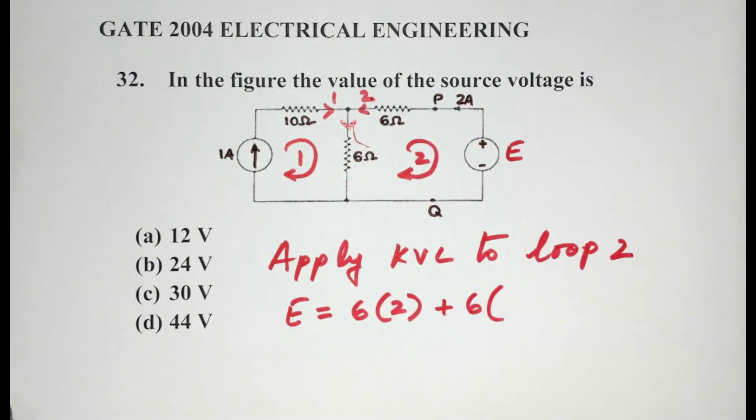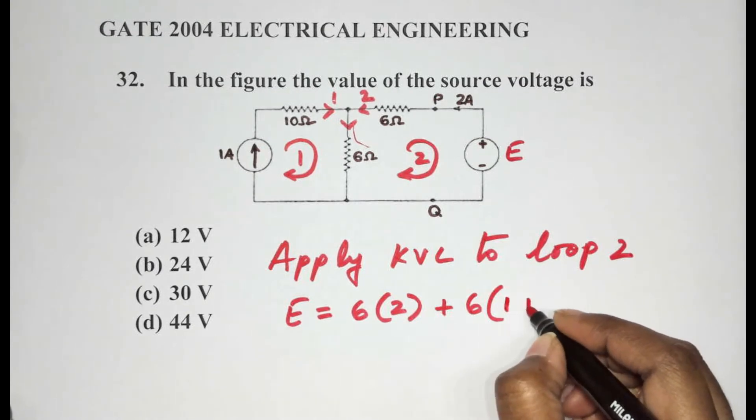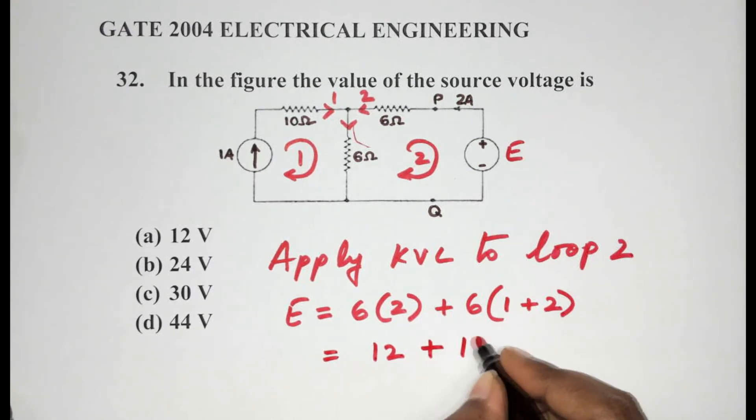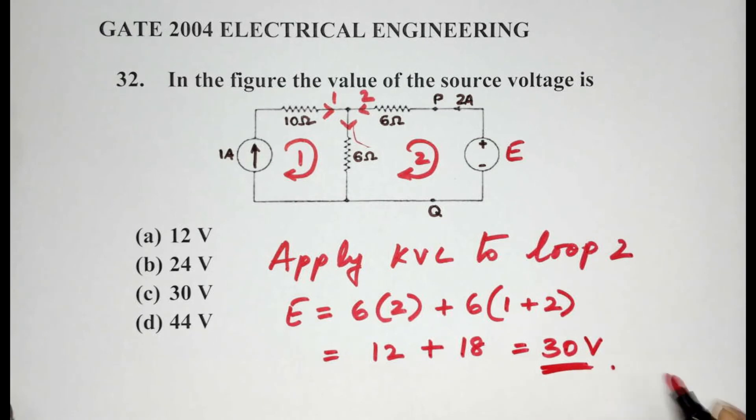So here it would be 1 plus 2. This is our expression now. Now let's solve: 12 plus 18, which gives us a value of 30 volts. And that matches option C.